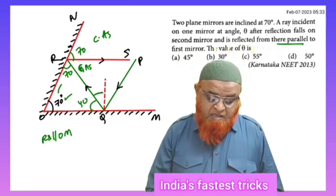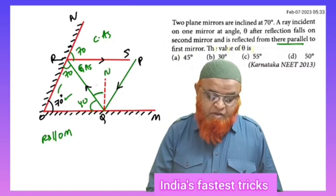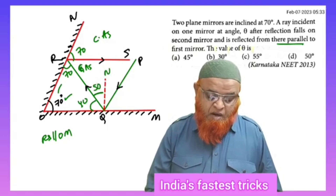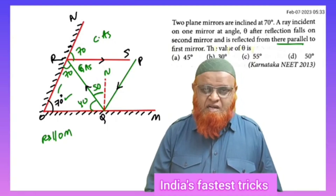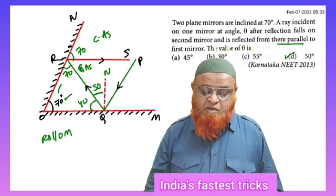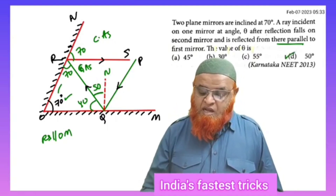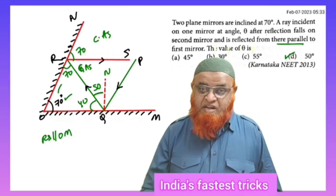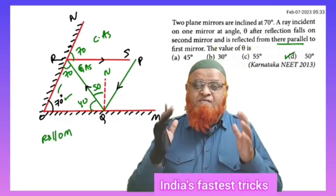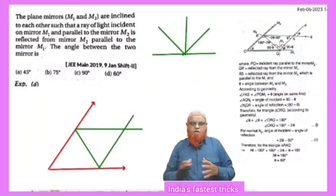But this angle plus this together is going to be 90° because this is the normal. If this is 40° then the remaining part is going to be 50°. Without pen and paper you can solve the problem. Your answer is going to be option D.